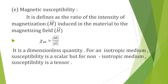Magnetic susceptibility is the ratio between the intensity of magnetization M vector and the magnetizing field H vector: chi_m equals modulus of M vector divided by modulus of H vector. It is a dimensionless quantity. For an isotropic medium, susceptibility is a scalar, but for a non-isotropic medium, susceptibility is a tensor.